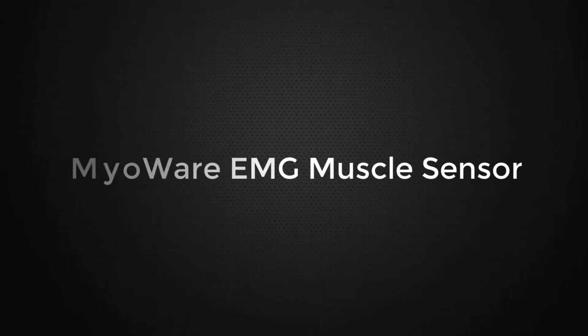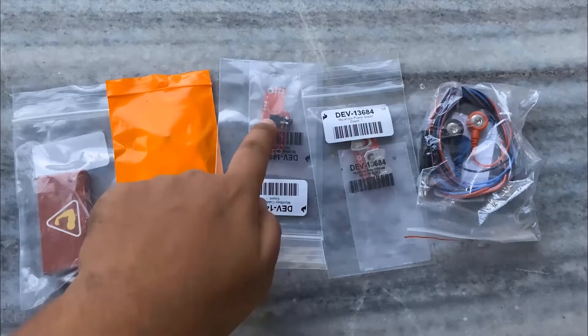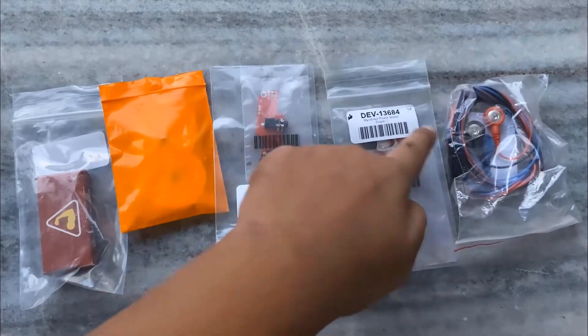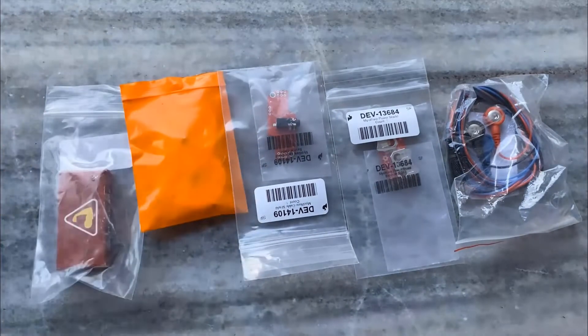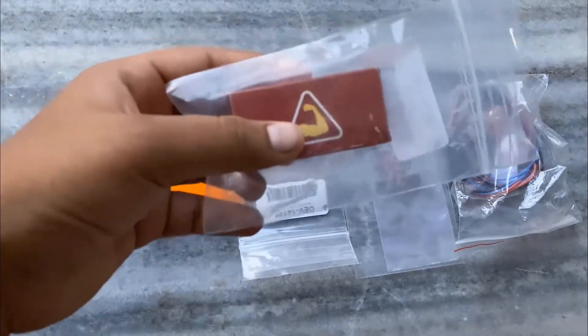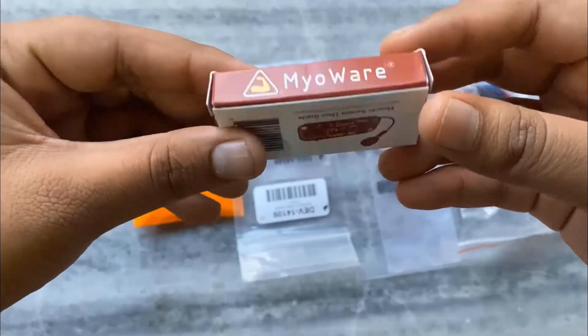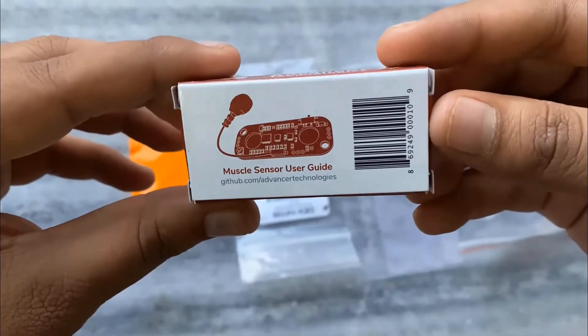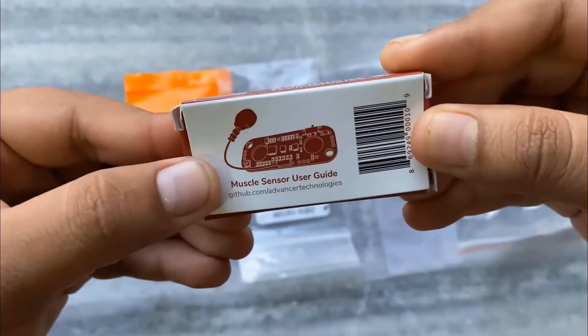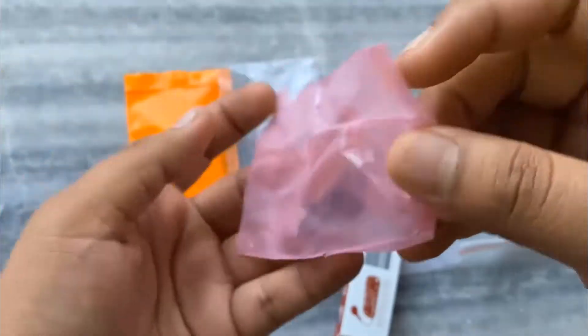First, let's see the Myoware EMG muscle sensor kit that I recently purchased from Amazon. So, here are multiple packets containing the main sensor board along with the expander board and different kits. We will see all the packets separately and learn what is inside and how to use them. This is the first board called Myoware EMG muscle sensor with embedded electrode connectors.